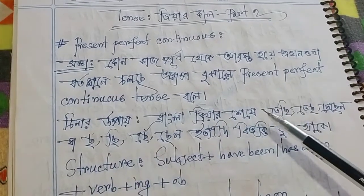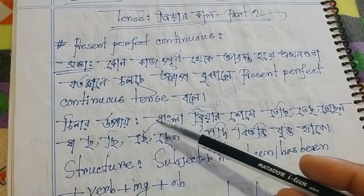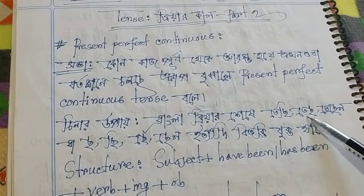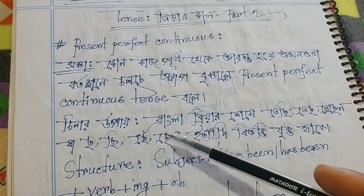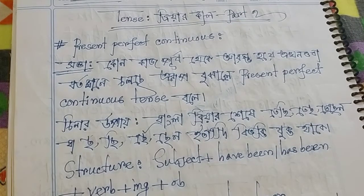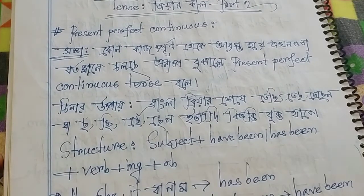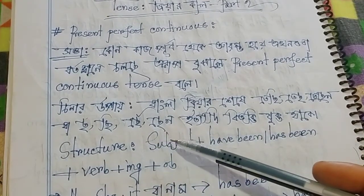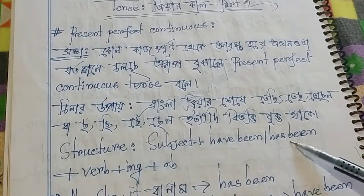Are there any questions about Present Perfect Continuous Tense? In Bangla, when a verb ends with techi, techo, techen, ba, cha, chi, or chechen, it follows the same structure. The structure is: Subject + have been / has been...